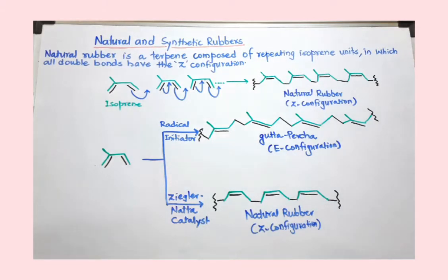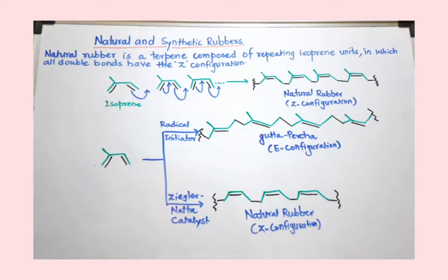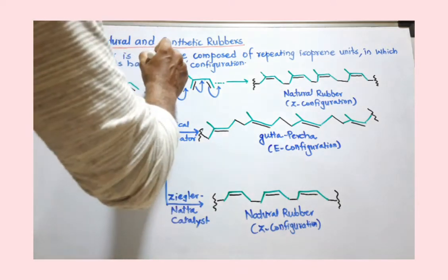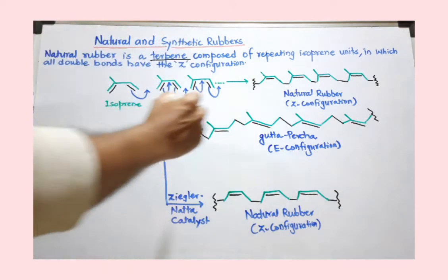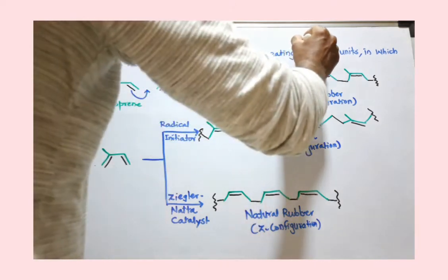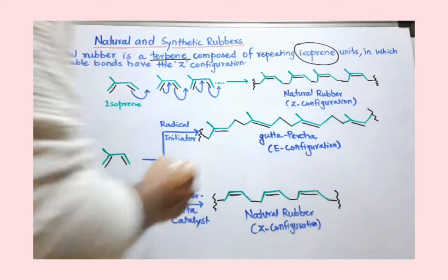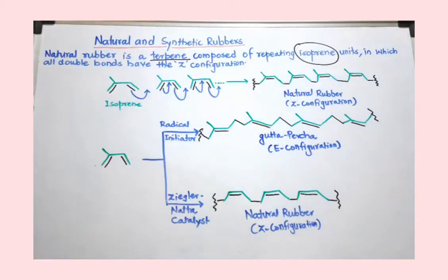Natural and synthetic rubbers — this is the topic we are going to discuss in this video. Natural rubber is obtained from the rubber tree, and it is a terpene where the isoprene unit is repeated n times.